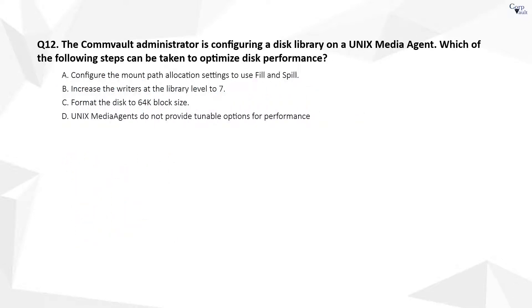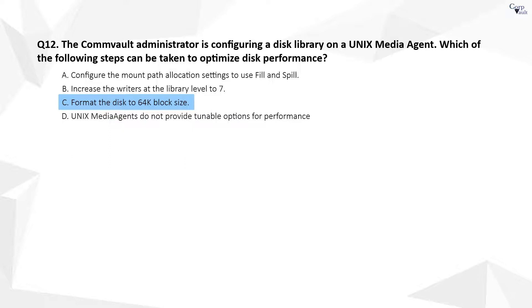Question 12. The correct answer is C. By default, the system uses 4GB as the chunk size and 64KB as the block size to read-write data from disk libraries. If necessary, you can change these values for each data path configured in a disk library.